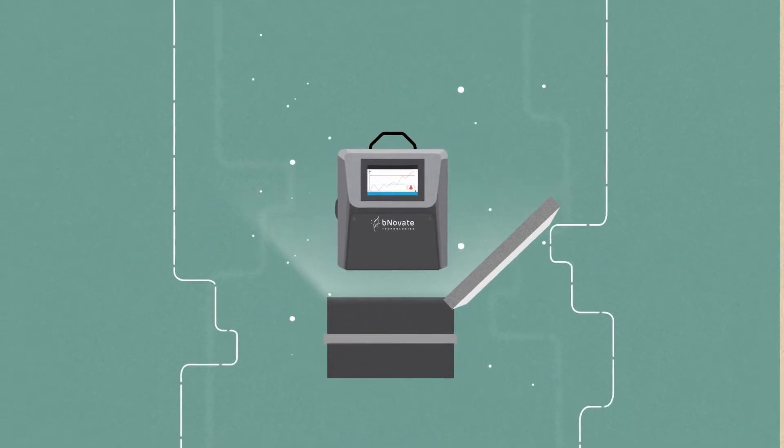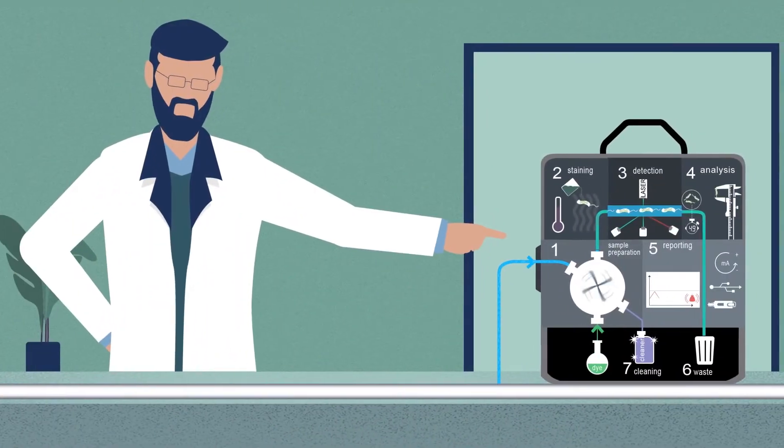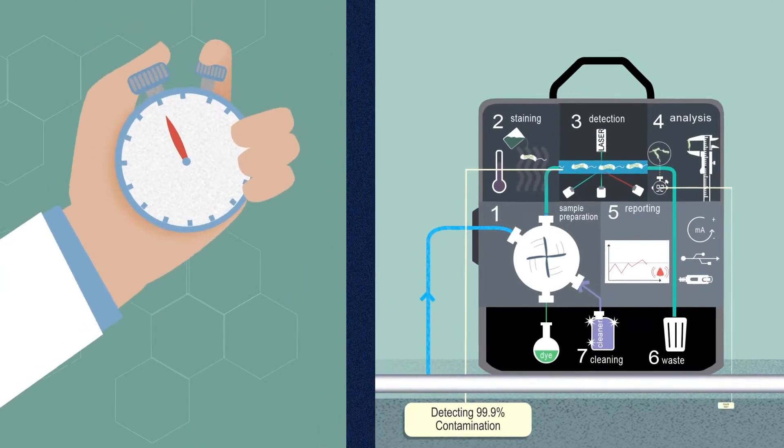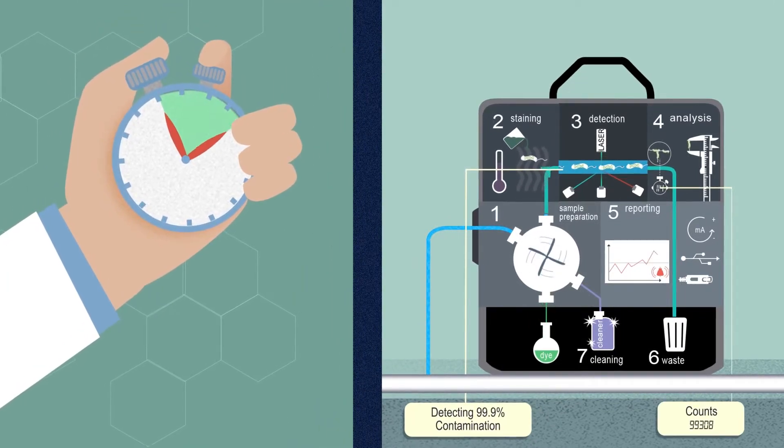The answer is BactoSense, a fully automated flow cytometer designed for industrial environments, precisely counting microbial cells in water in only 20 minutes.